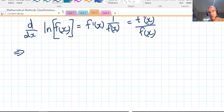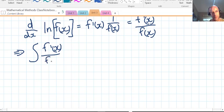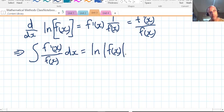So it follows that if we take the integral of f dash of x over f of x dx, in other words if we have a function of x on the denominator and we have its derivative on the numerator, we can simply follow the following. So natural log of absolute value of f of x plus c the arbitrary constant.